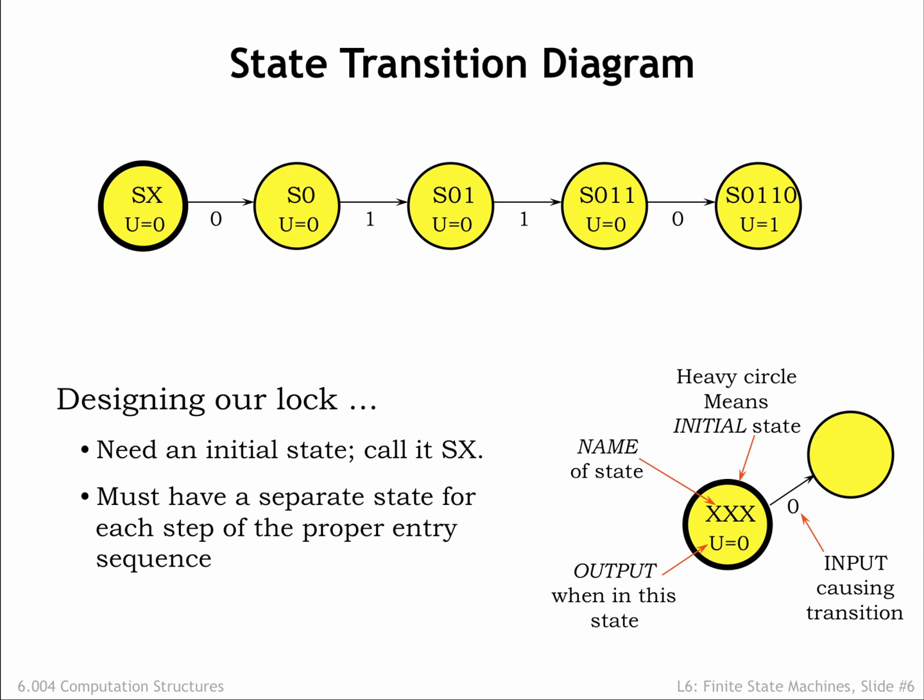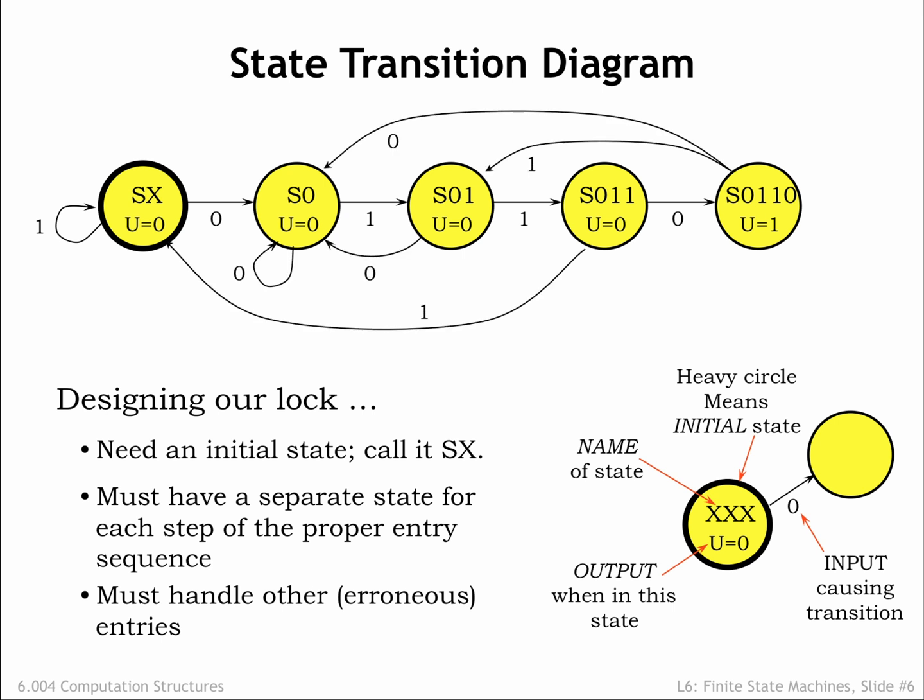What should the FSM do if an input bit is not the next bit in the combination? For example, if the FSM is in state SX and the input bit is a 1, it still has not received any correct combination bits, so the next state is SX again. Here are the appropriate non-combination transitions for the other states. Note that an incorrect combination entry doesn't necessarily take the FSM to state SX.